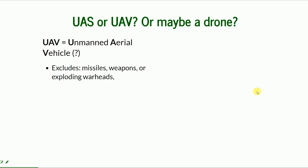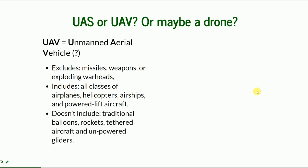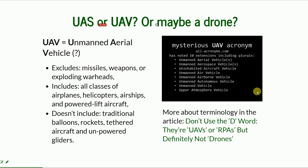There is also confusion about what an unmanned aerial vehicle actually includes. Is it everything that flies without a person on board? Not exactly. The community has agreed that it does not include missiles, weapons, or exploding warheads, but it does include all classes of airplanes, helicopters, airships, and powered lift aircraft. It does not include traditional balloons, rockets, or unpowered gliders — even though the first aerial imagery was taken from a balloon.